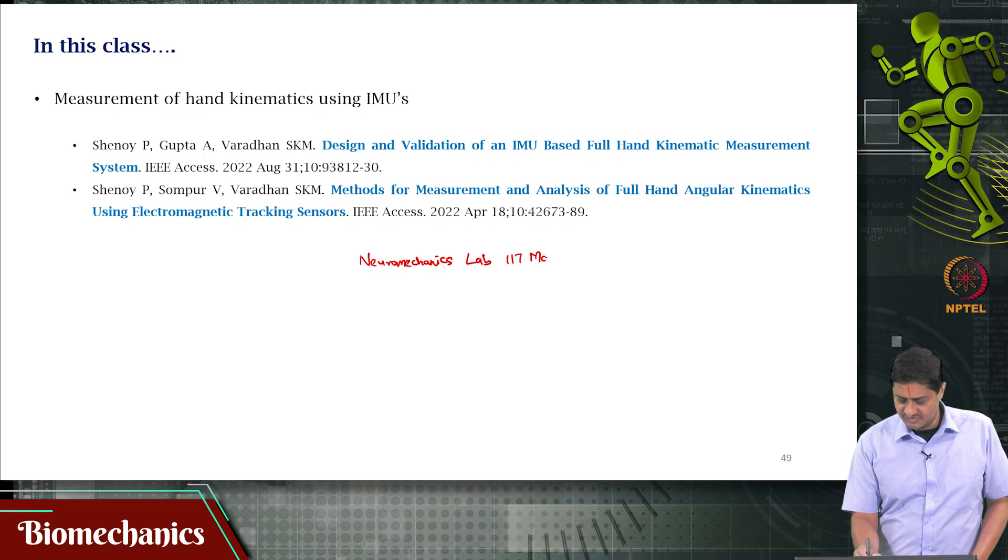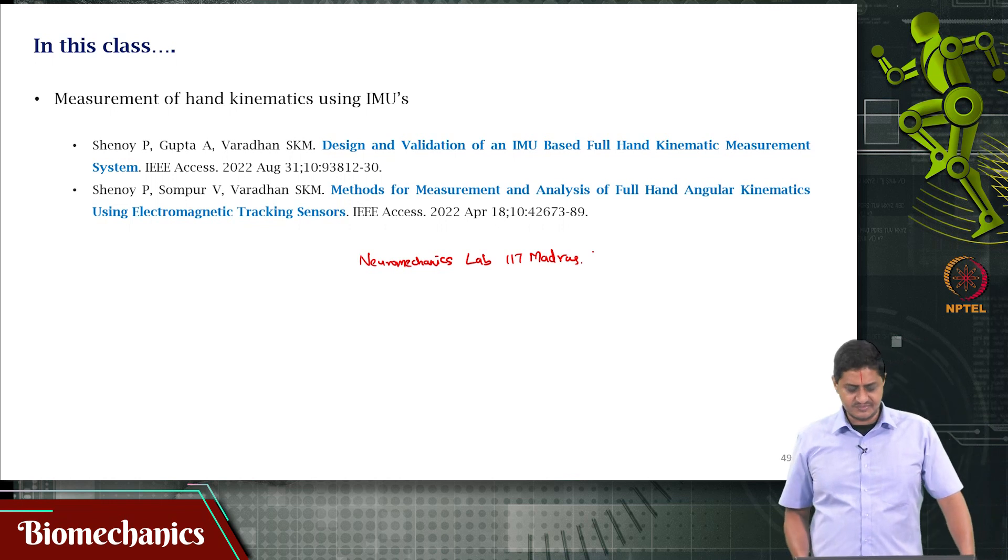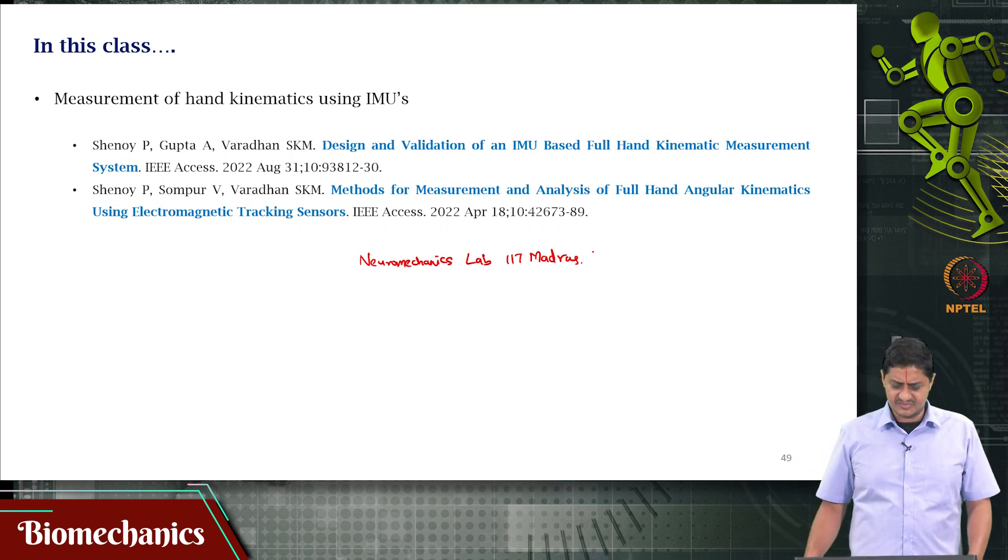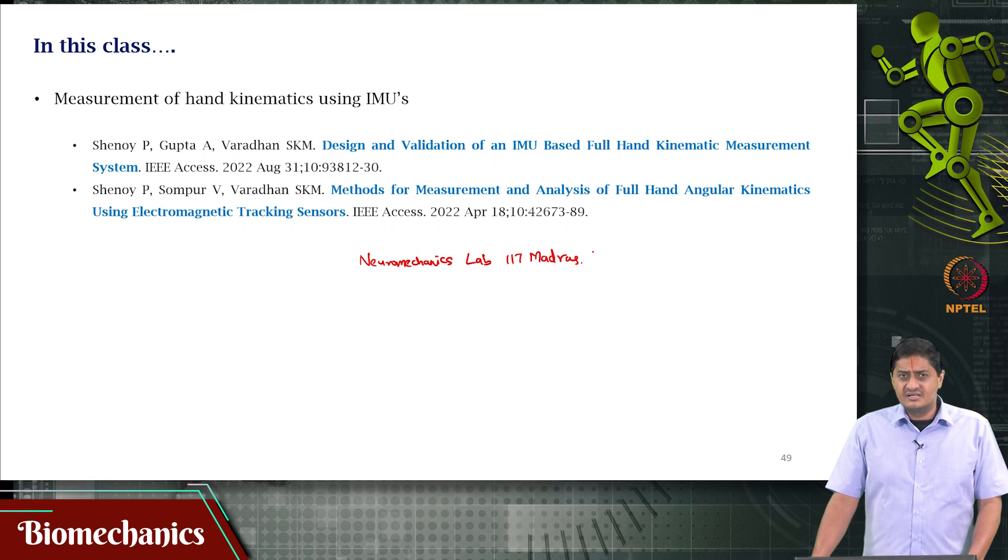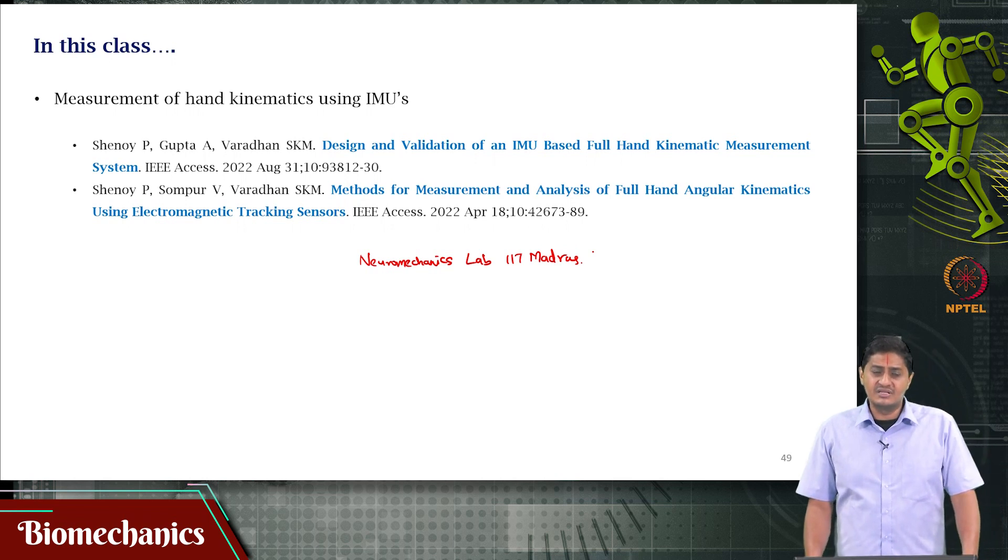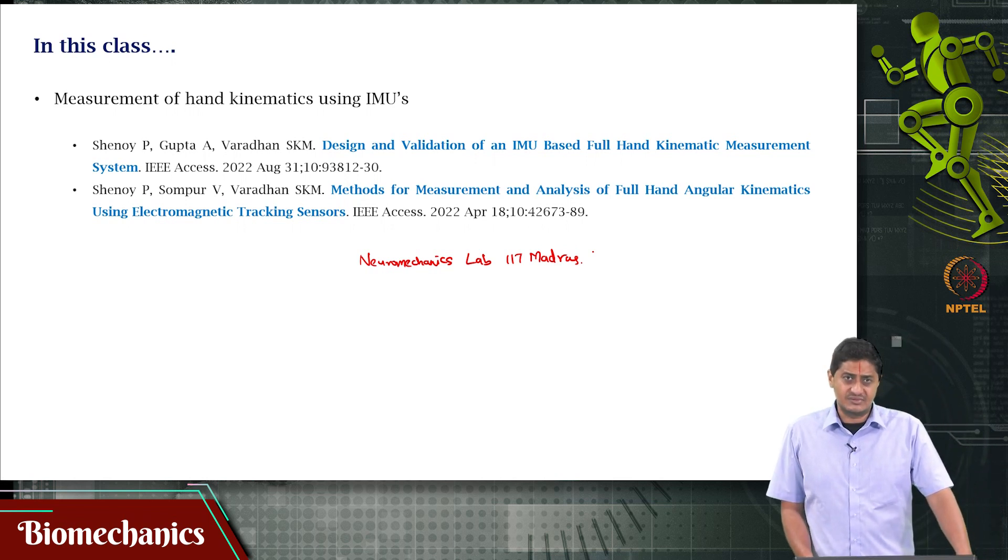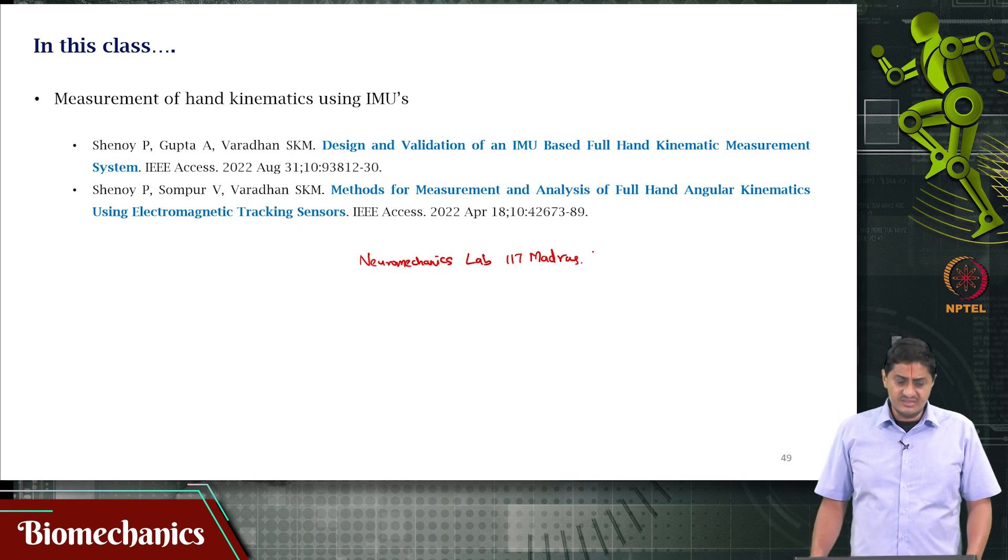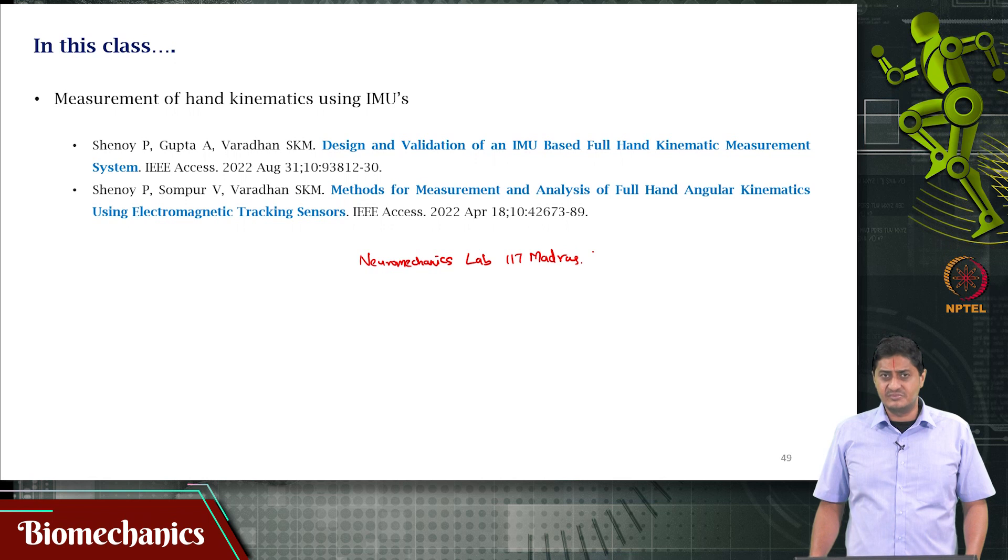What is the work that we do at the Neuromechanics Lab at IIT Madras? Here we will try to see a relatively simple summary of these 2 papers. The details of all the methods, analysis, and results are found in these 2 papers. These are open access papers - you can find their PDFs online, just Google them.